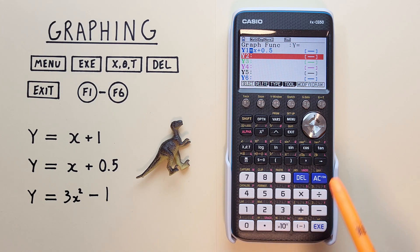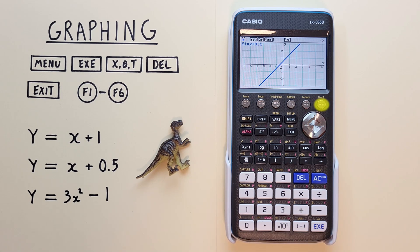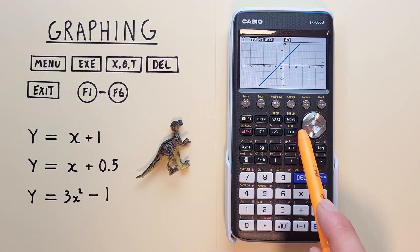And this time, let's hit F6 for draw. And there we go. There's our new updated line. And then again, we'll go back with the exit key.